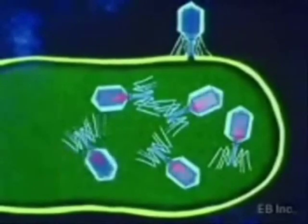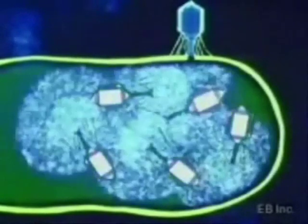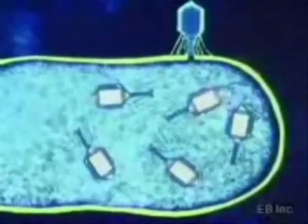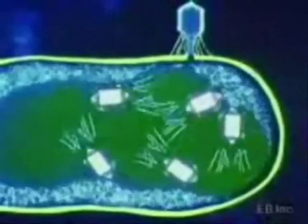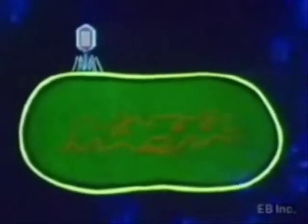Finally, the new phages release an enzyme which weakens the cell wall, and the host cell bursts, releasing the virions. Up to 300 new virus particles can be reproduced in a single host cell. This process of viral multiplication is called the lytic cycle.